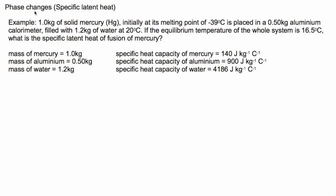In this example, we have one kilogram of solid mercury (Hg) initially at its melting point of minus 39 degrees Celsius. Mercury is interesting because below minus 39 it's solid, but above that — like at room temperature — it's liquid, a metal that's liquid at room temperature. This mercury is placed in a 0.5 kg aluminum calorimeter filled with 1.2 kg of water at 20°C. The equilibrium temperature of the whole system is 16.5°C. We need to find the specific latent heat of fusion of mercury.